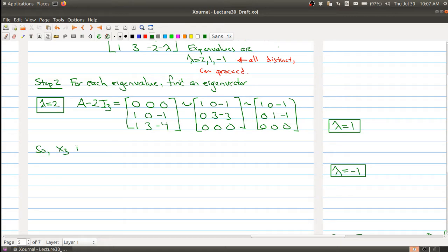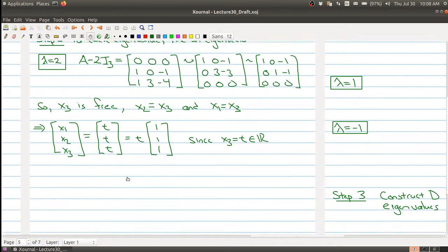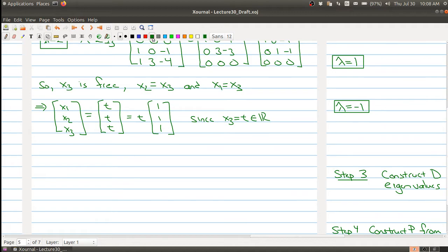So we look at this matrix—x3 is a free variable, and we also see that x2 is equal to x3 and x1 is equal to x3. So that implies that [x1, x2, x3] = [x3, x3, x3] = t[1, 1, 1], since we're letting x3 be equal to t, any real number.